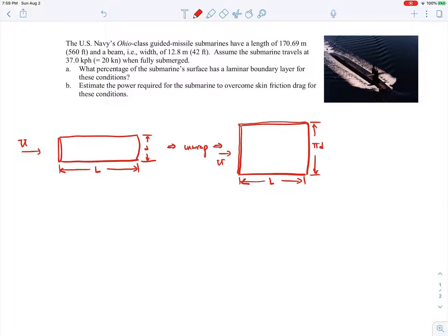So the first thing we need to do is find where the boundary layer transitions from laminar flow to turbulent flow, because we're asked to find in part A what percentage of the submarine surface has a laminar boundary layer. So the critical Reynolds number we know, based on the distance x - x is the distance from this leading edge - the critical Reynolds number is 500,000. And the Reynolds number based on x will be the velocity times x divided by the kinematic viscosity, so that will equal 500,000.